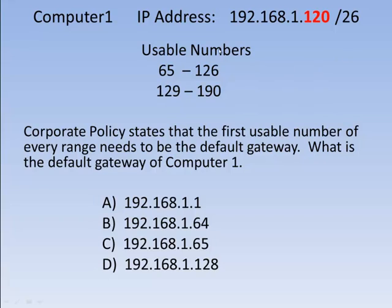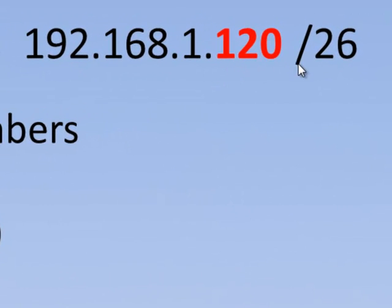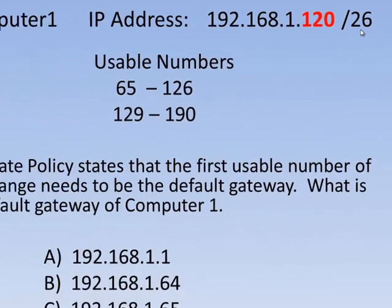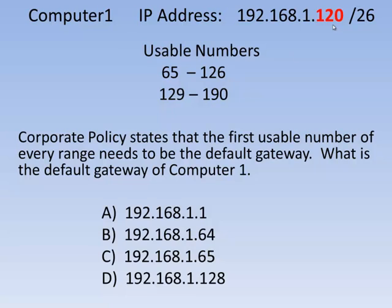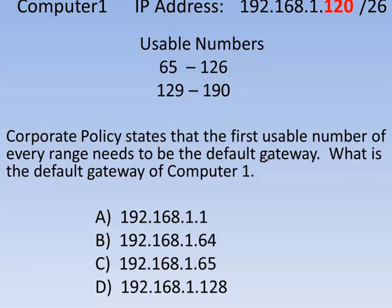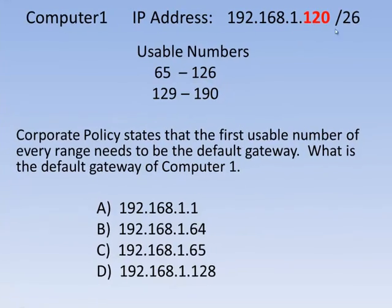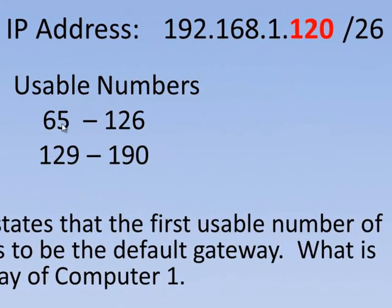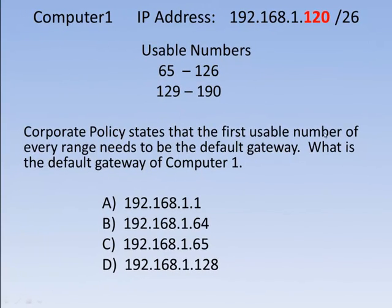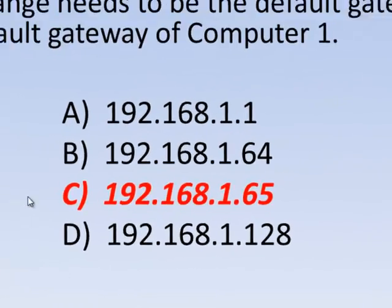Going back to our original question: Computer1's IP address is 192.168.1.120 with a subnet mask of 255.255.255.192. Computer1's IP address is 120. The corporate policy states that the first usable number of every range needs to be the default gateway. Since Computer1 is 120, it falls between 65 and 126 — on the first usable range. Since the first usable number needs to be the default gateway, the default gateway would be 65. So our answer is C. In this video, I showed you how to figure out a range for a subnet mask.